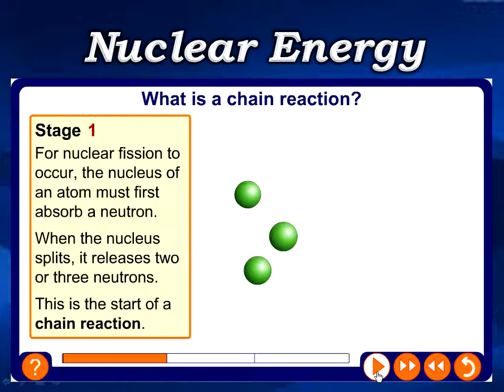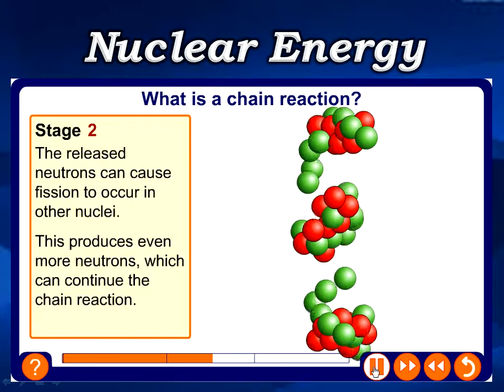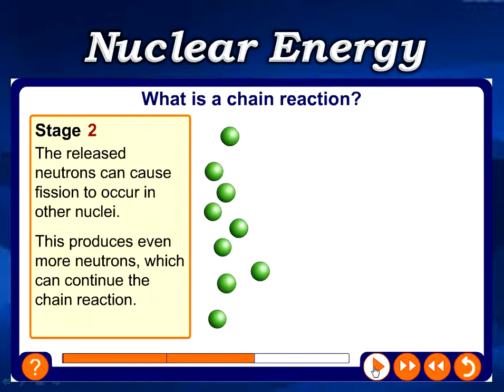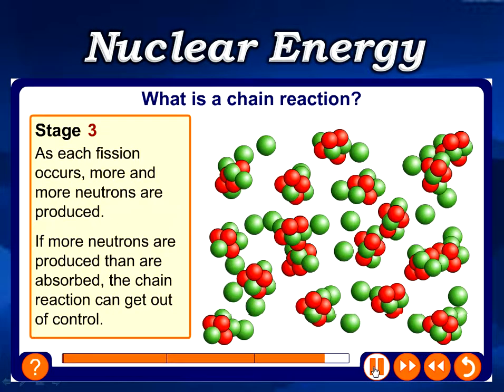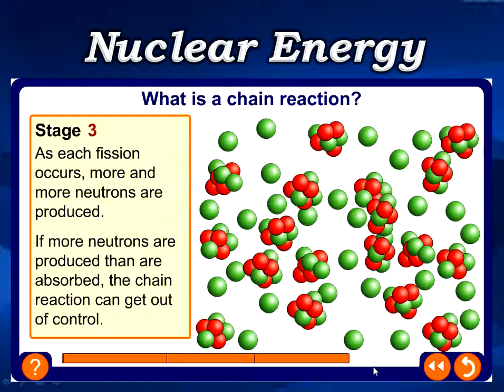Stage two: the released neutrons cause fission in other nuclei, producing even more neutrons which continue the chain reaction. More and more neutrons collide with uranium atoms to keep the chain reaction going. Each fission event decomposes uranium atoms and produces additional neutrons. If neutrons produced exceed those absorbed, the chain reaction can get out of control.